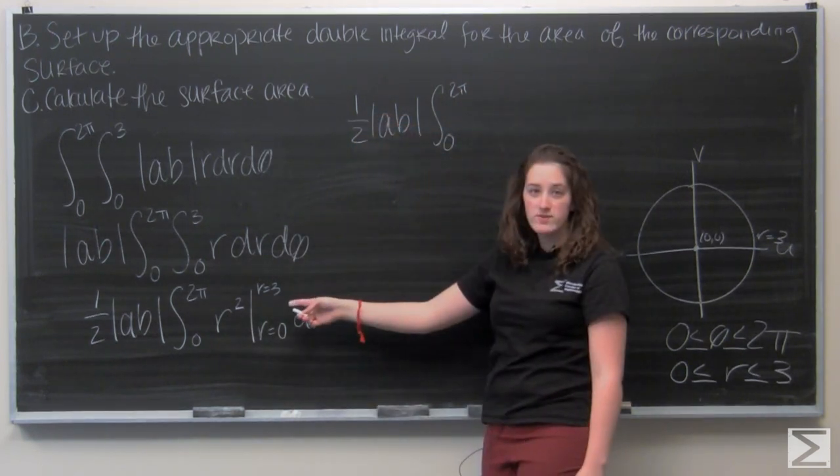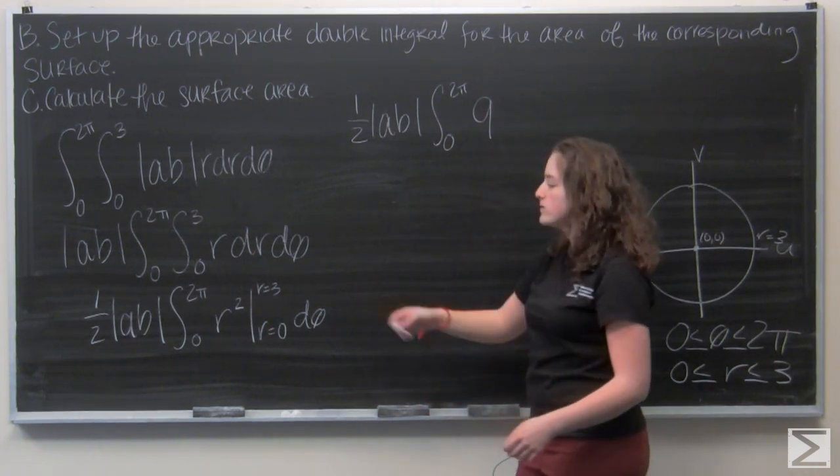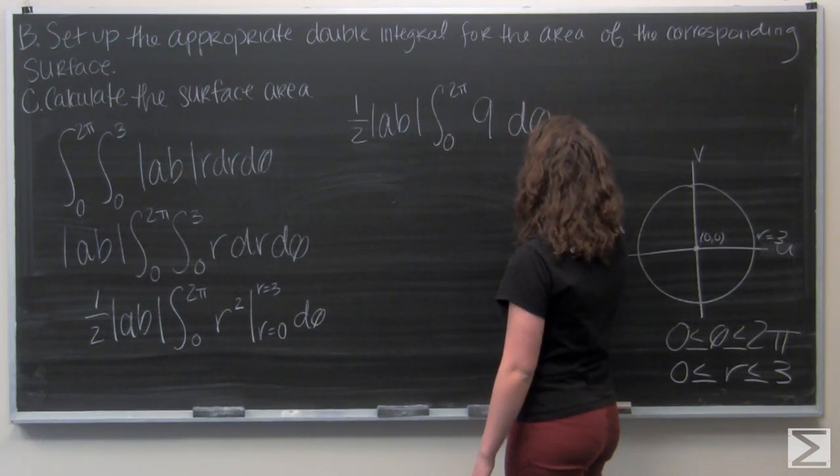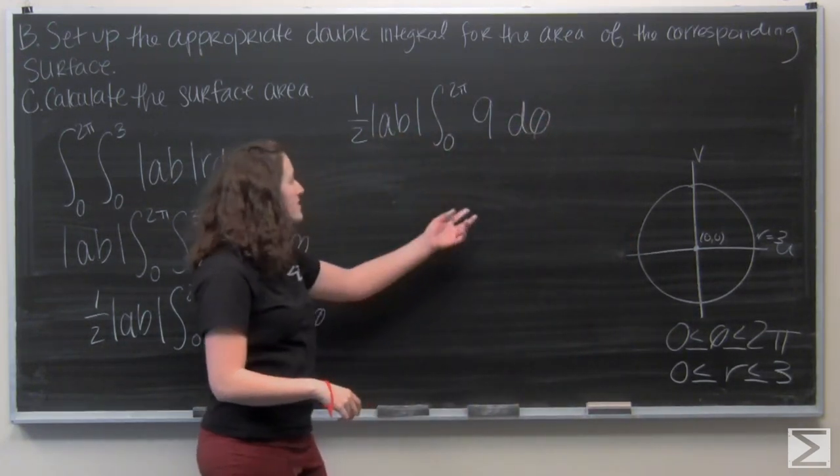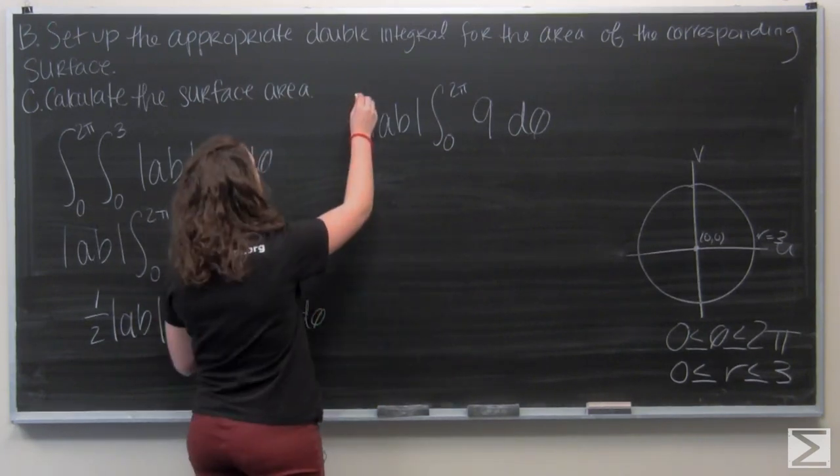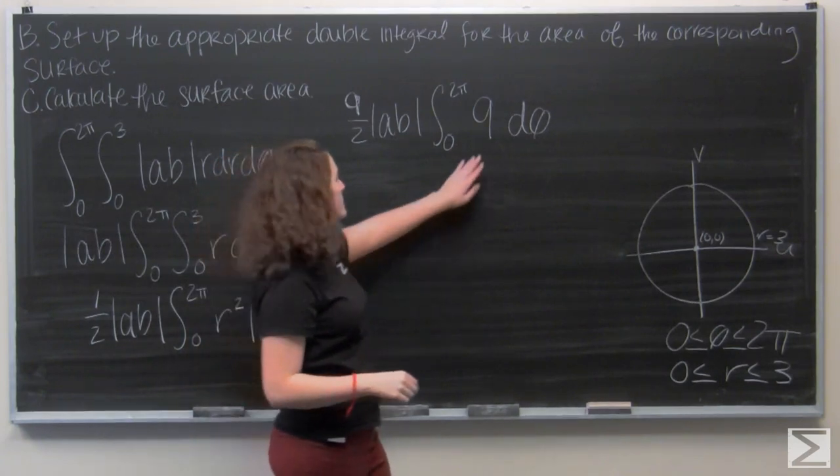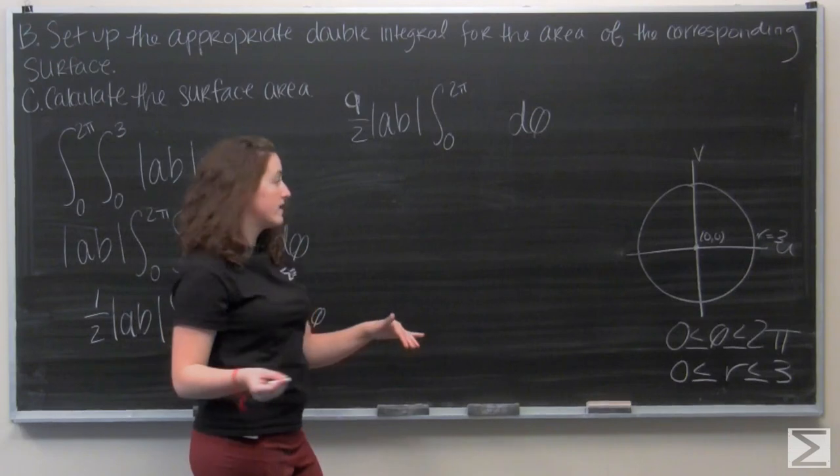Well, when I plug in r equals 3, I'm going to get 9. And then when I plug in r equals 0, I'm going to get 0. Okay, now I'm ready to integrate with respect to theta. But first, let me go ahead and pull that 9 out. So I get 9 halves up front, and then I'm just integrating d theta. And that's really easy, because I'm just going to get theta.